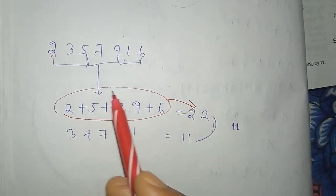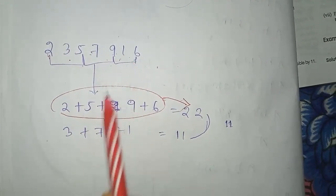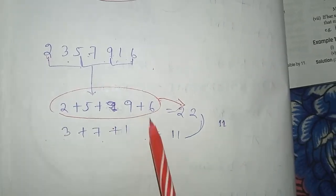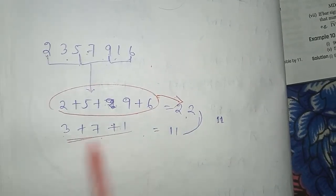Next, let's check the other alternate digits. This is 3 plus 7 plus 1.